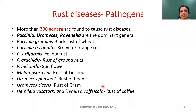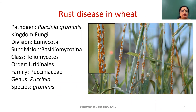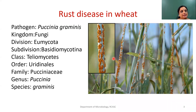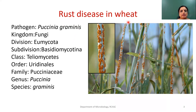Now let us move on to the systematic position. As I mentioned in my previous class, if a question is asked, you have to write about the pathogen, the host, the disease, systematic position, symptoms, life cycle, and control measures — in that order. I am going to explain in the same way. We are going to study in detail the rust disease in wheat caused by Puccinia graminis.